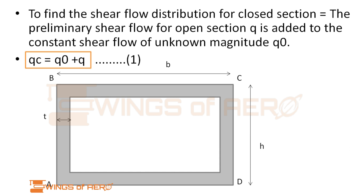It is a bending problem, not a bending-twist problem, because in this rectangular cross section the shear load is acting on the shear center, so there is no twist — only bending. In such a problem, we can solve by noting that the shear flow distribution for a closed section equals the preliminary shear flow for an open section q, added to a constant shear flow of unknown magnitude q0.